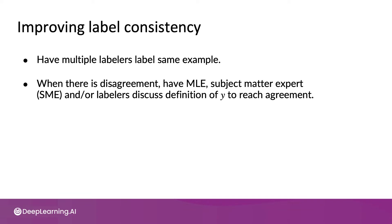When you find that there are disagreements, have the people responsible for labeling — this could be the machine learning engineer, it could be the subject matter expert such as the manufacturing expert responsible for labeling what is a scratch and what isn't — and the dedicated labelers discuss together what they think should be a more consistent definition of a label and why. Try to have them reach an agreement, and ideally also document and write down that agreement. This definition and reasoning can then become an updated set of labeling instructions that they can use to label new data or to relabel old data.